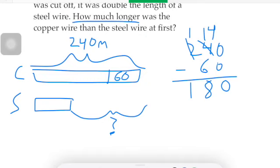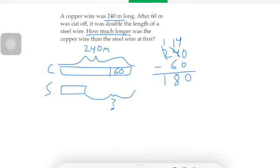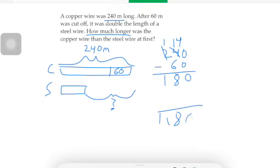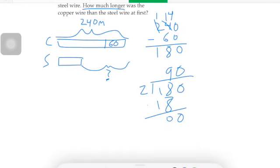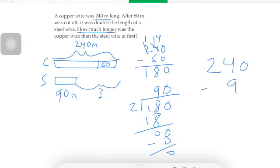After the sixty was taken off, the copper wire was double the length of the steel wire. Double means two times as much, so you have to cut one hundred eighty in half. One hundred eighty divided by two — two goes into eighteen nine times, two goes into zero zero times — equals ninety. So we know the steel was ninety meters long.